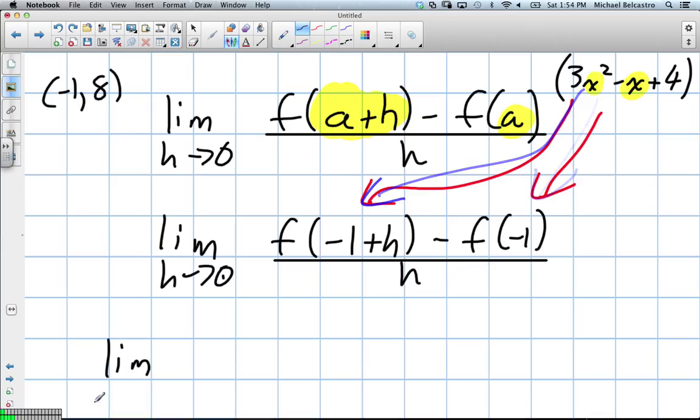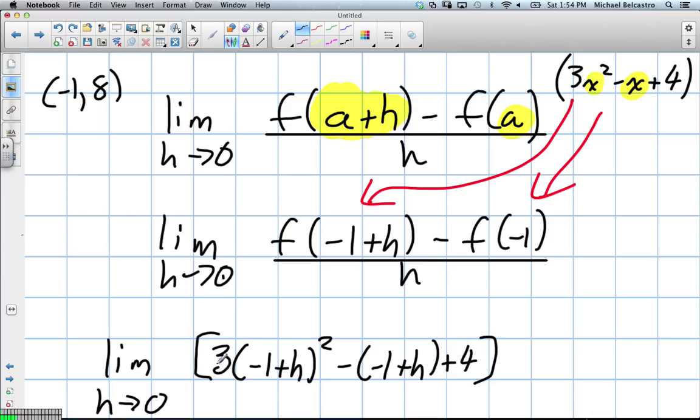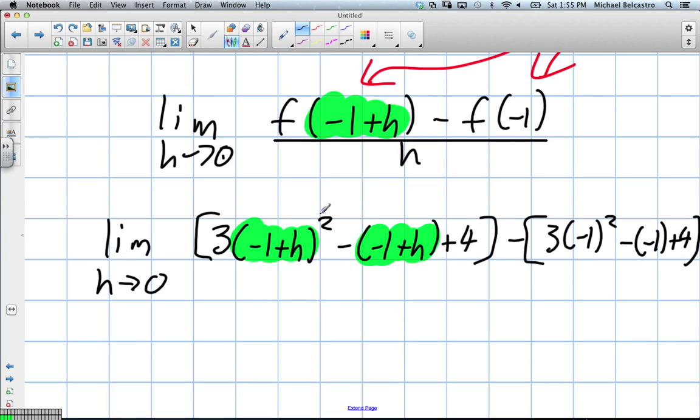We go to put those functions in. We have the limit as h approaches 0. Well, this function reads 3. And instead of putting in x, we're going to put negative 1 plus h squared minus negative 1 plus h plus 4. We do not have to bracket them. No, exactly. That's what we've done. We've now replaced each x value. Specifically with that value. And that's where the x would be. And then subtract this same equation but when it's negative 1. So now it's 3 negative 1 squared minus negative 1 plus 4, which we've already technically solved. All divided by h.